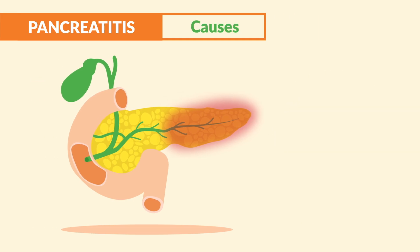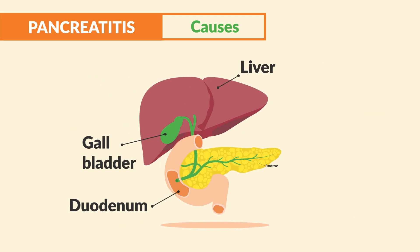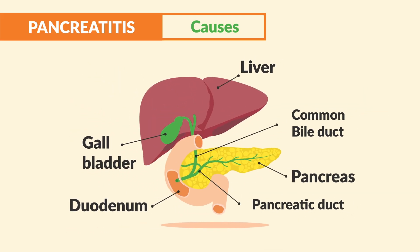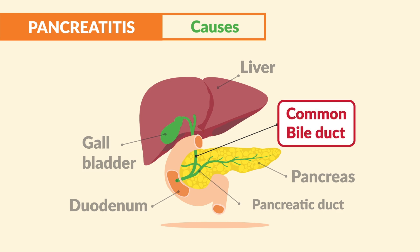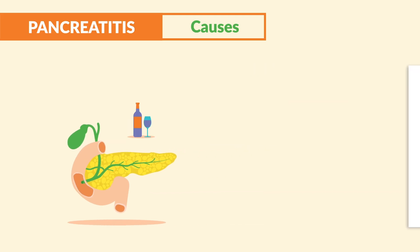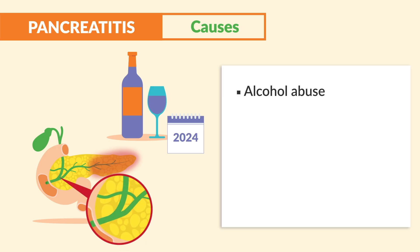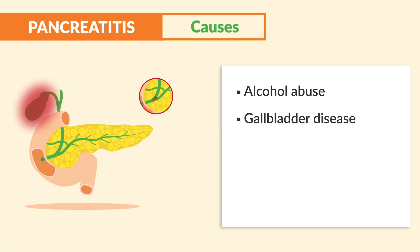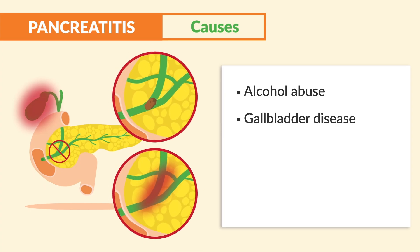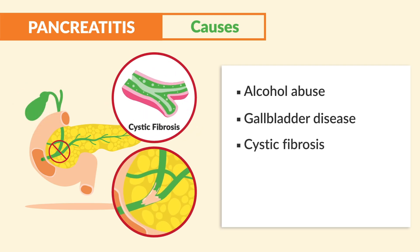The causes are simple — think anything that can block the pancreatic duct. We have a lot of organs closely fitted together, like an apartment complex, all sharing the common bile duct which branches into the pancreatic duct. Common causes include alcohol abuse from years of inflammation that occludes the duct, gallbladder disease where a gallstone or inflammation blocks the duct, and cystic fibrosis where serious mucus can block the pancreatic duct.